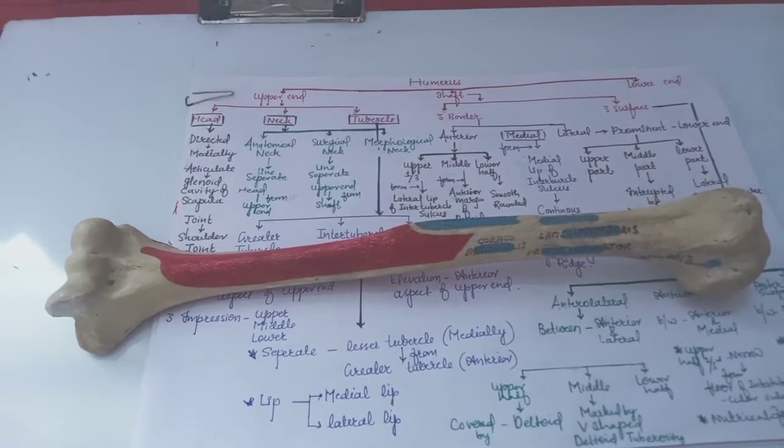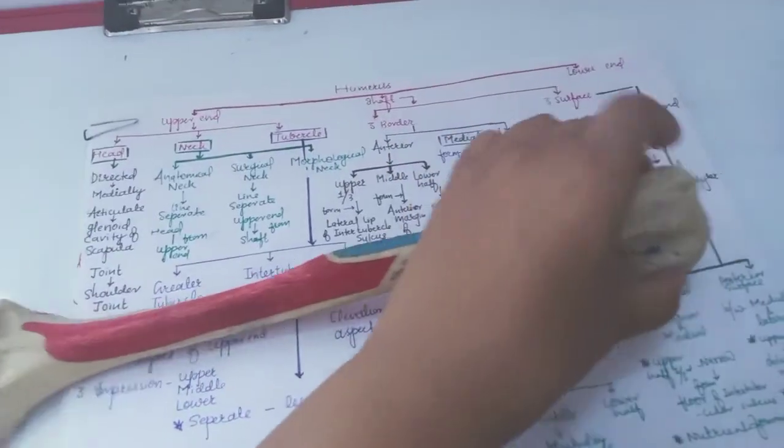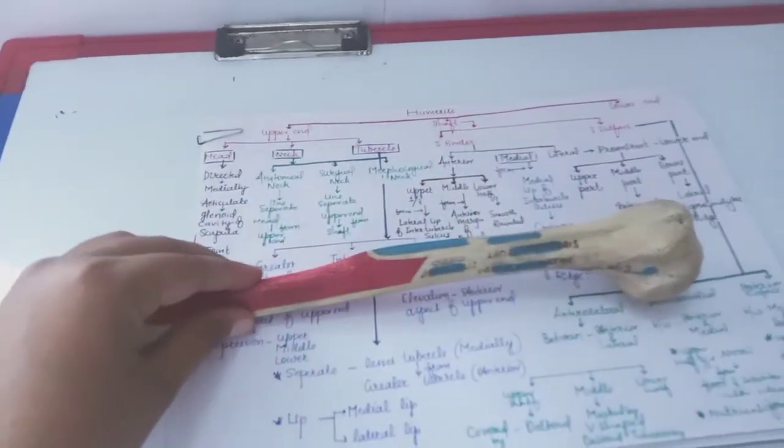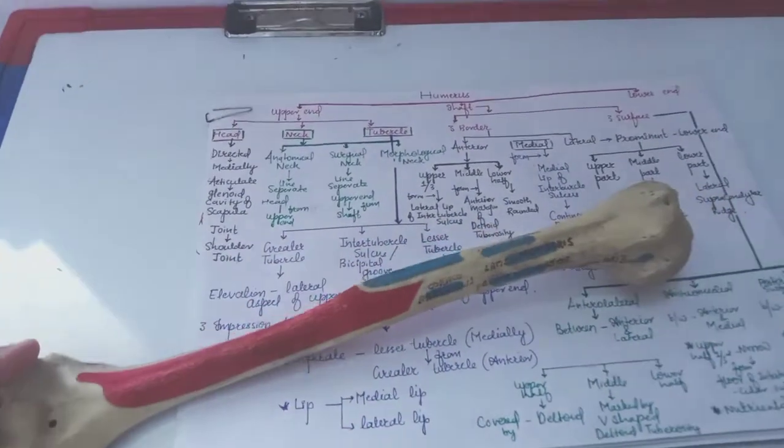It has upper end, then shaft, and the lower end. Then the side determination of the humerus.